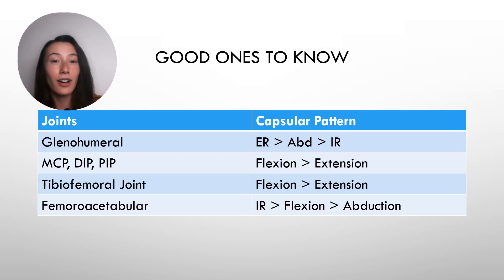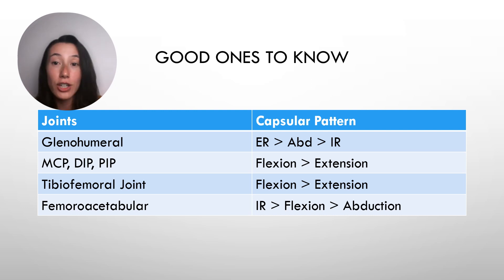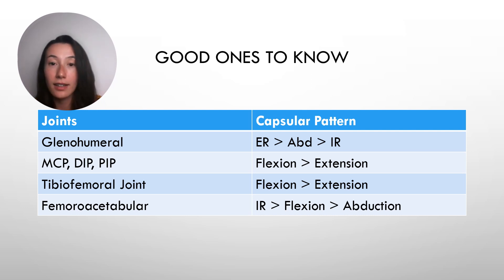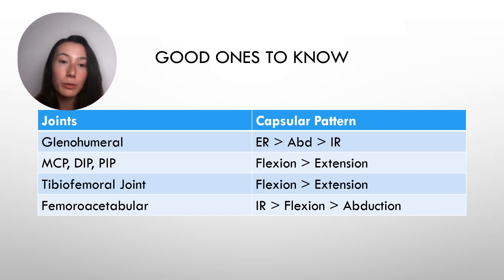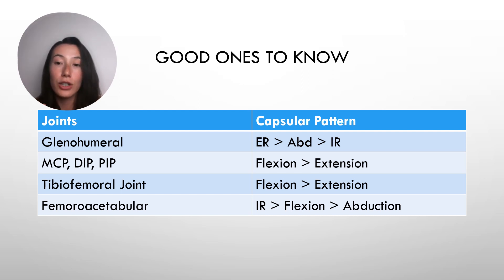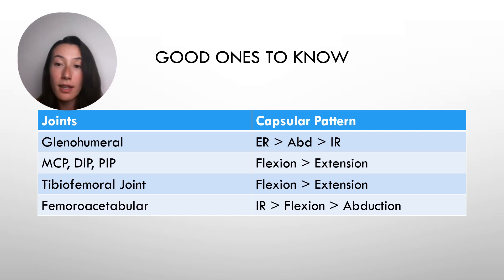This is not an exhaustive list, but here are a few to keep in mind for the NPTE. If there's anything going on with the joint capsule of the digits, your patient is going to have a harder time flexing their fingers versus extending. If we're looking at the knee joint, people are going to be more limited in flexion versus extension — think about knee osteoarthritis, that's how they present. Even though the glenohumeral and femoroacetabular joints are relatively similar, if you look at each respective joint, they are all unique in their capsular pattern.